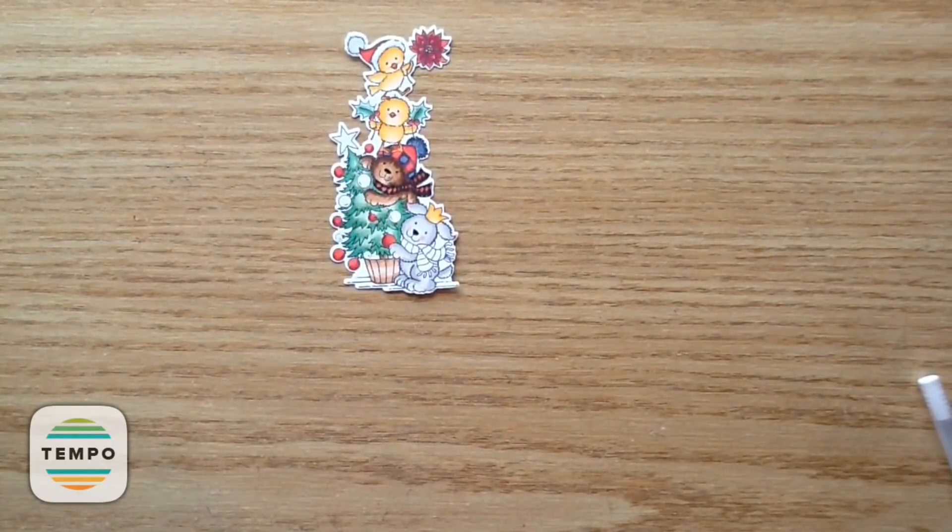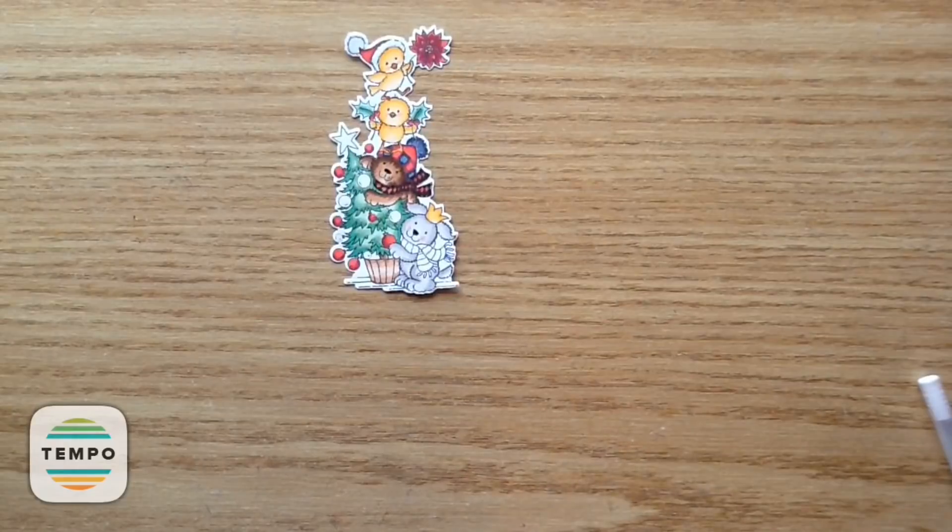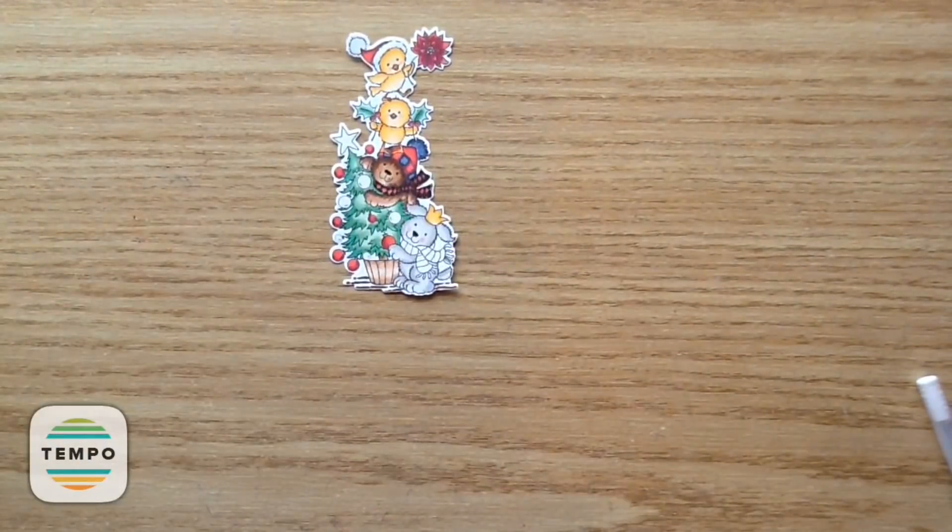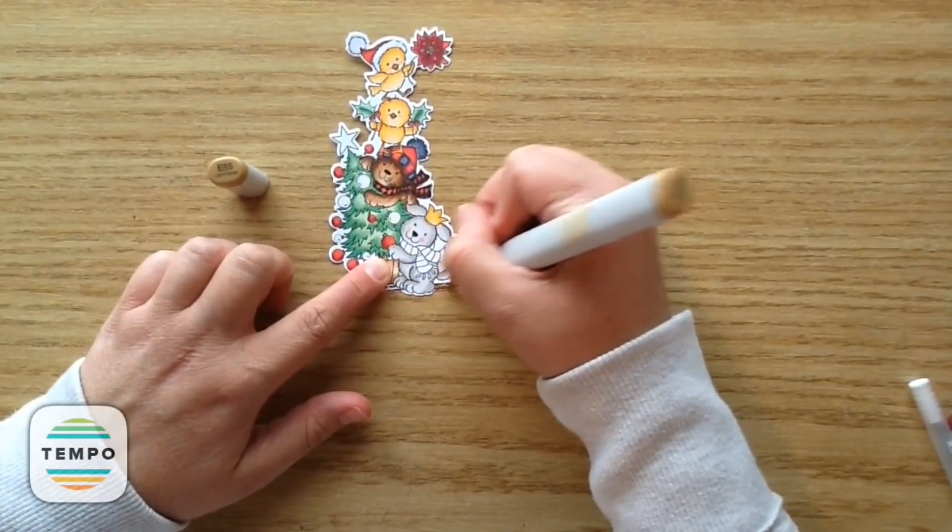Now I'm just going to do the bottom part that they're standing on. Kind of like the ground. So I'm going to use a brown color so it looks like hardwood. So I'm using E57. And then I go in with E55 to blend that out.